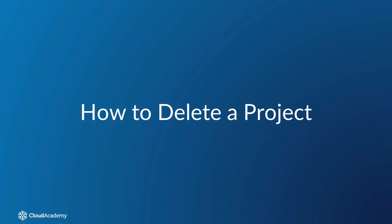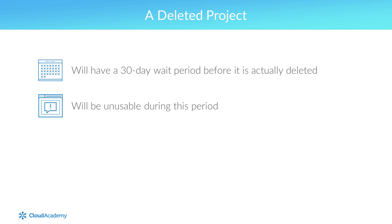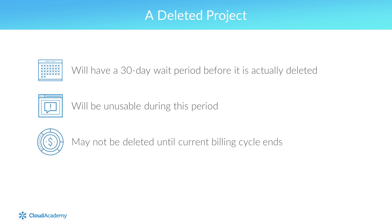When you no longer have use for a project, you can delete it in the GCP console. A project is marked for deletion for 30 days before it is actually deleted. While the project is marked for deletion, it is unusable; however, its resources still count against your project quota until it is deleted. If a billing account is assigned to the project, the project may not be deleted until the current billing cycle ends.